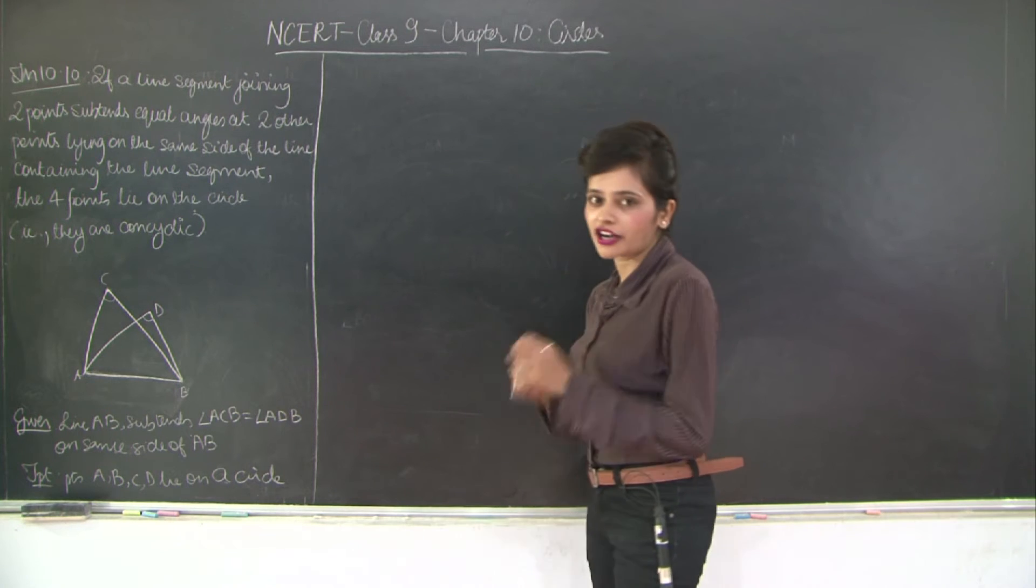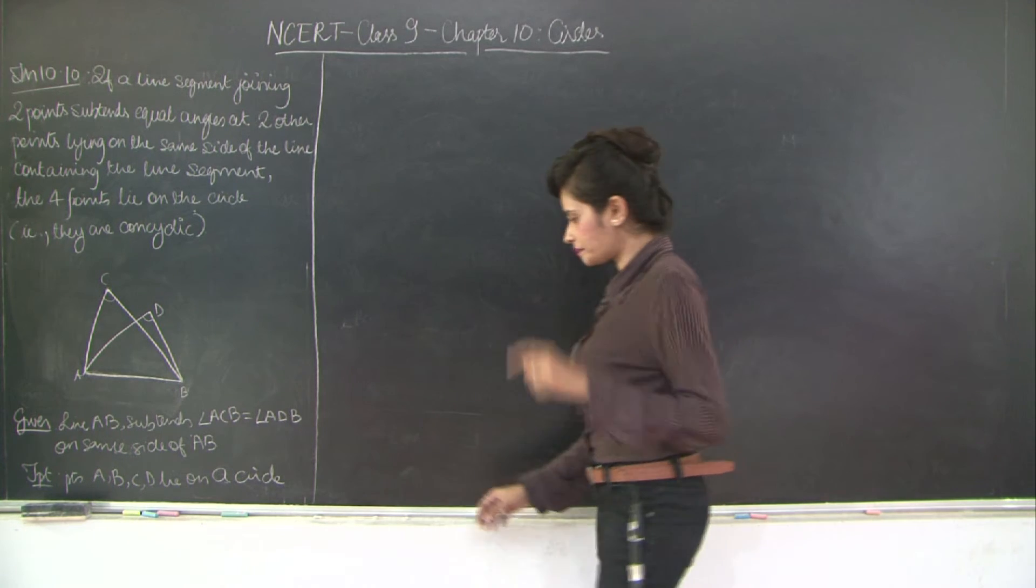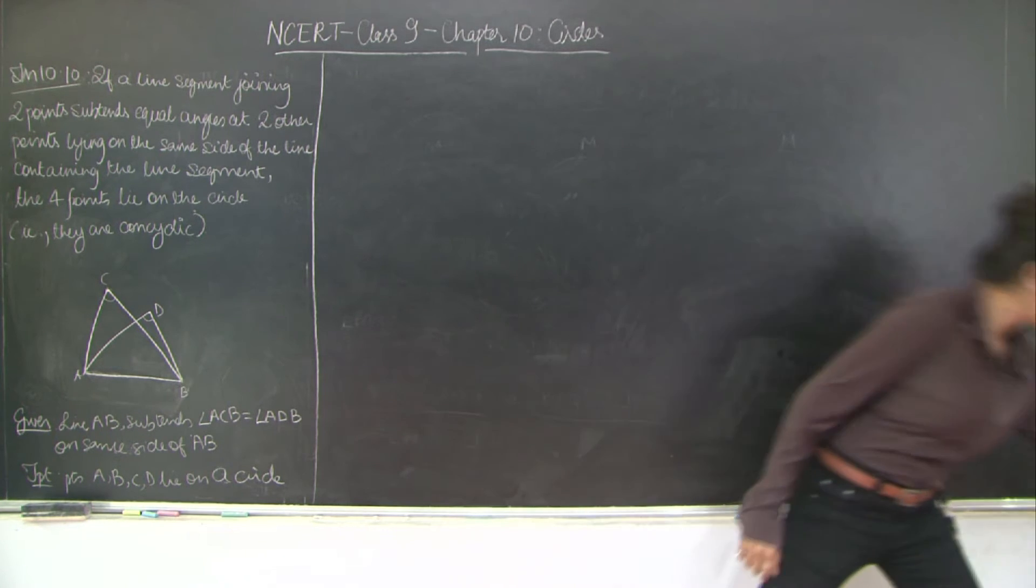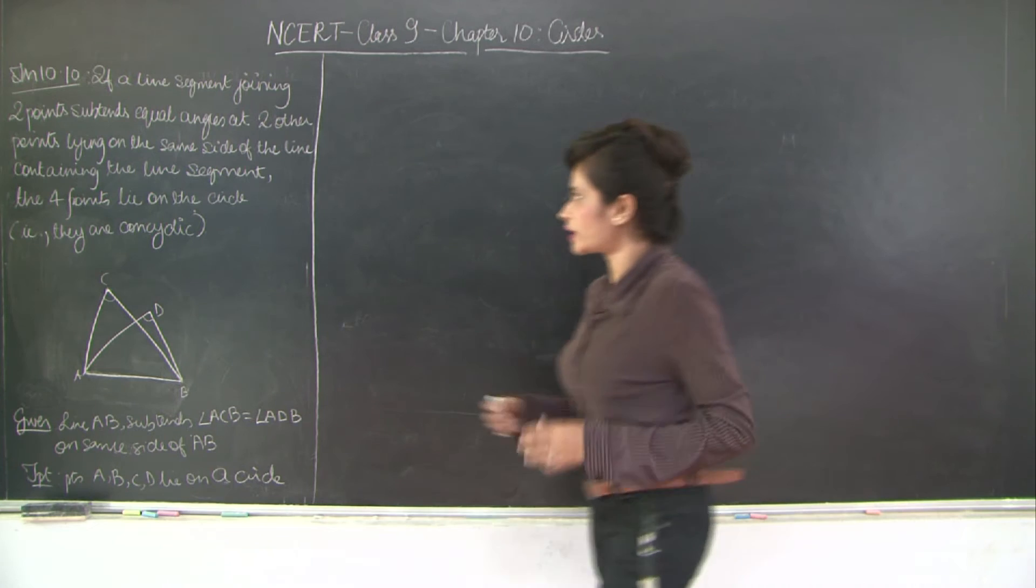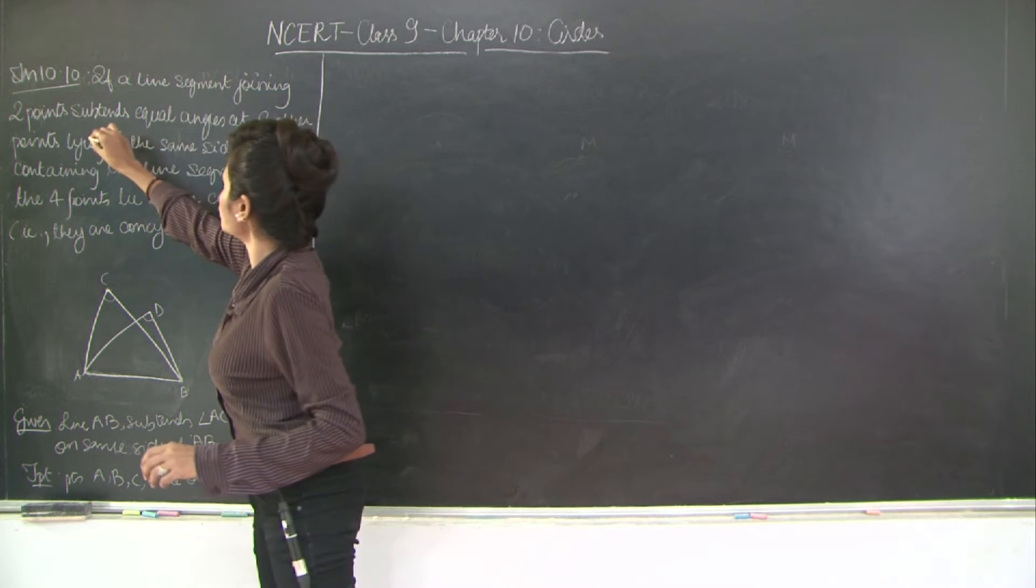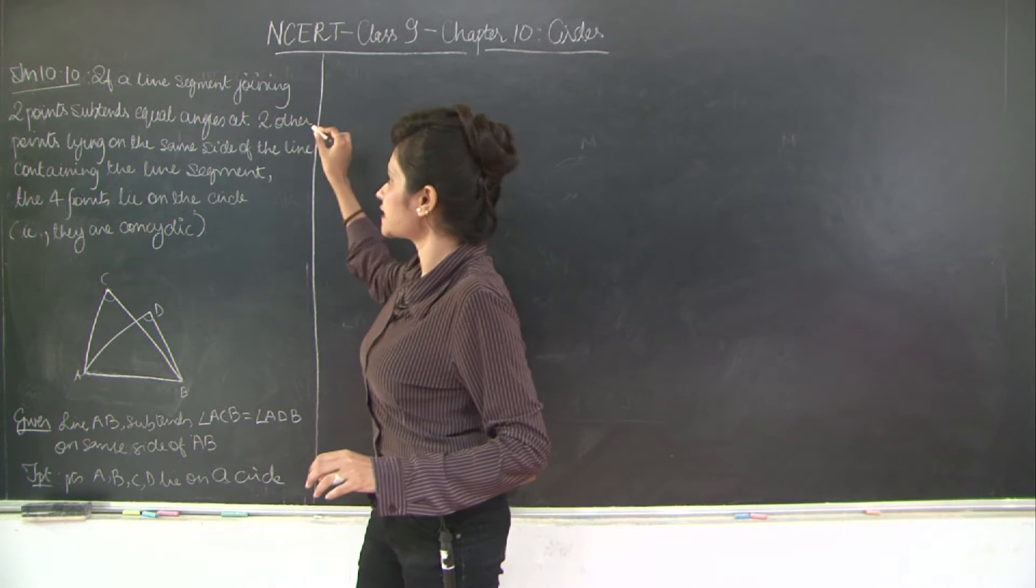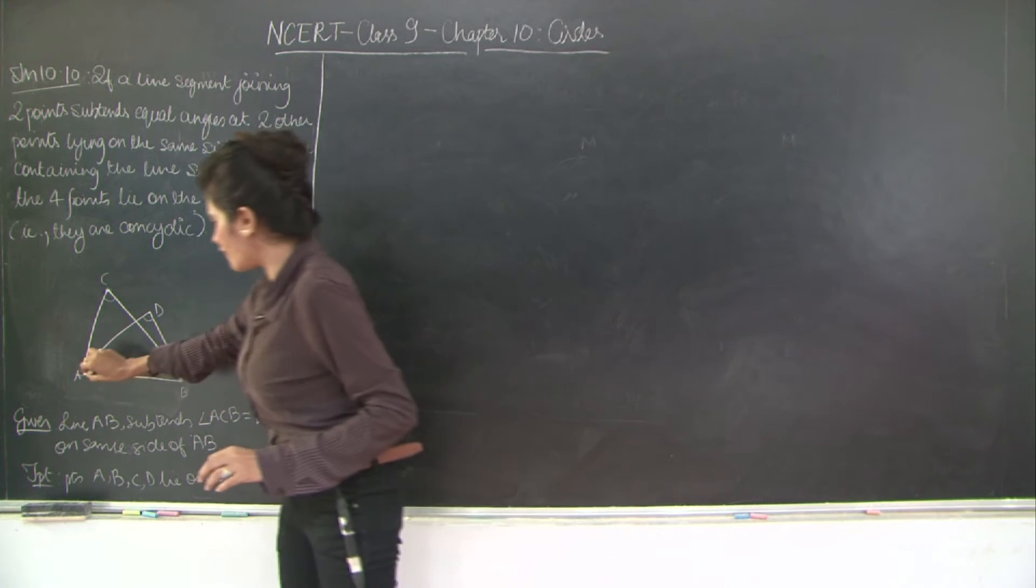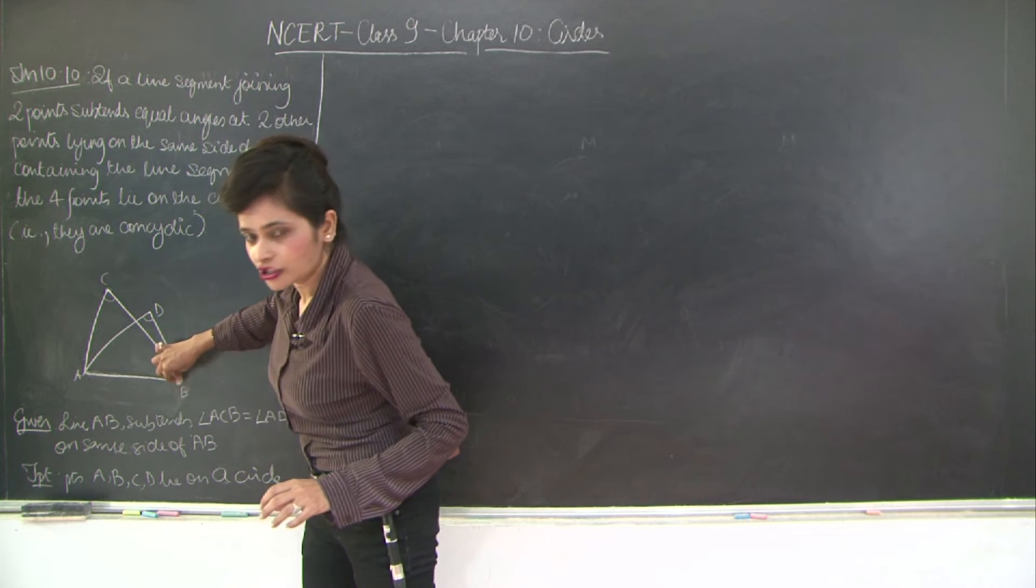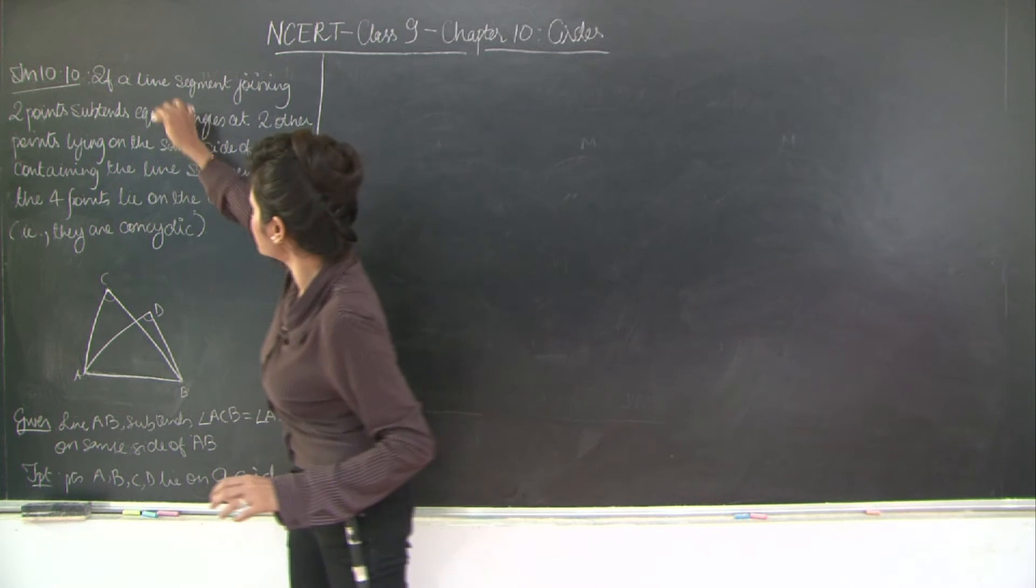So let's break the statement and figure out what's been done in the given and what needs to be proved. Let me just grab a chalk. So you have two, if a line segment joining two points subtends equal angles at two other points. So I have a line segment that is joined by two points A, B. So I have joined A, B. So this is the first part.